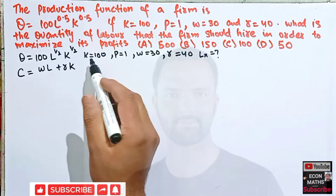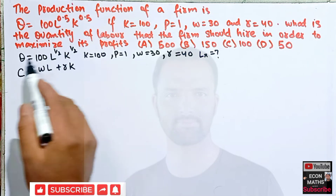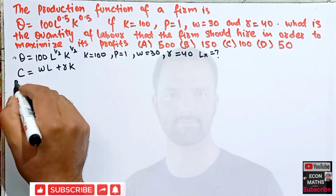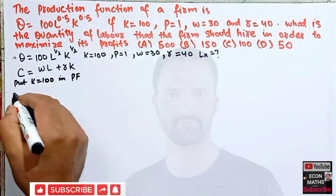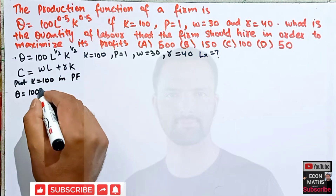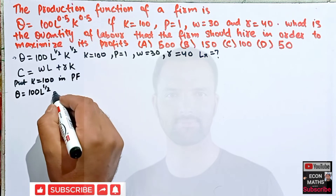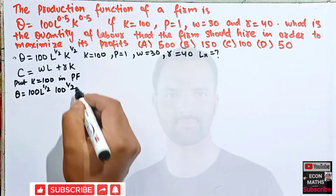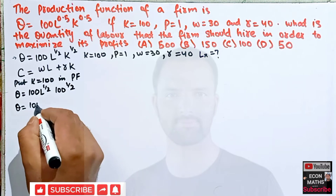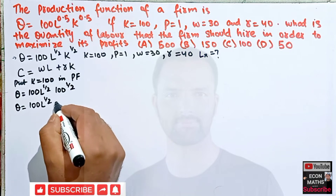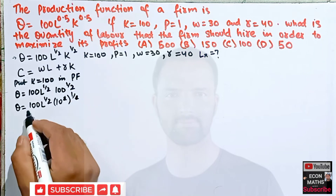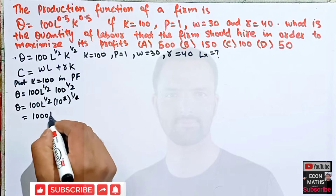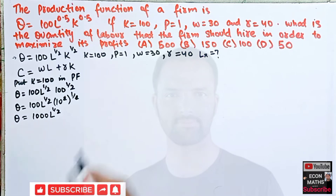Since K = 100, let us substitute K into the production function. Plugging K = 100 gives Q = 100 × L^(1/2) × 100^(1/2). Since 100^(1/2) = 10, this becomes Q = 100 × 10 × L^(1/2), so Q = 1000 × L^(1/2).